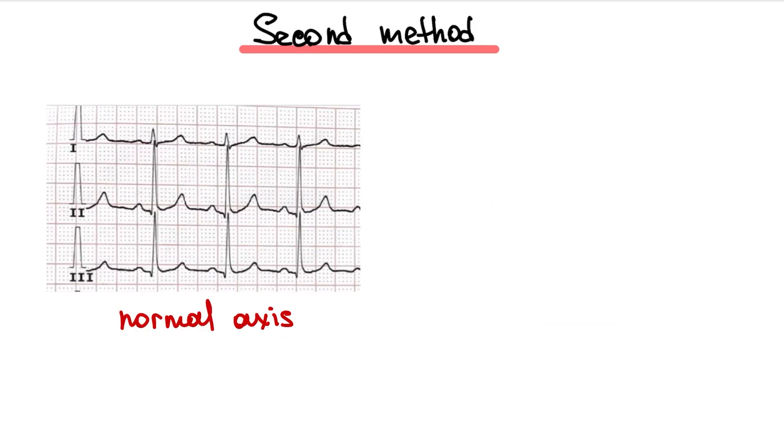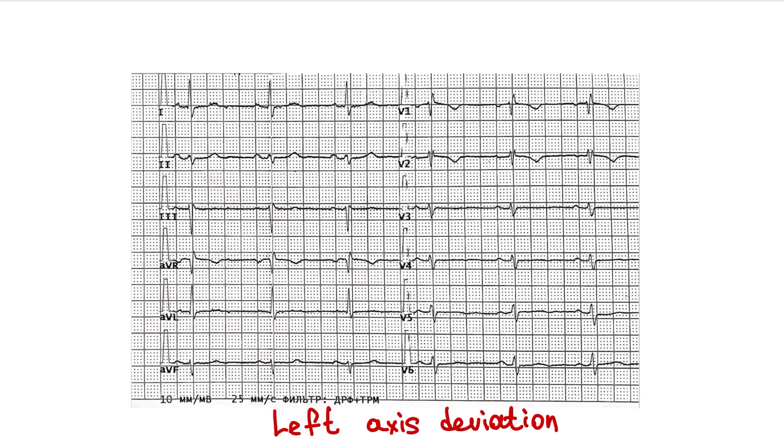The second method is more simple. Look at the R wave at lead 1, 2, and 3. When the axis is normal, R wave is maximum at lead 2. Left axis deviation, R wave maximum at lead 1. Right axis deviation, R wave maximum at lead 3.